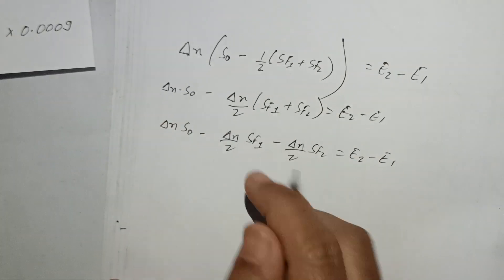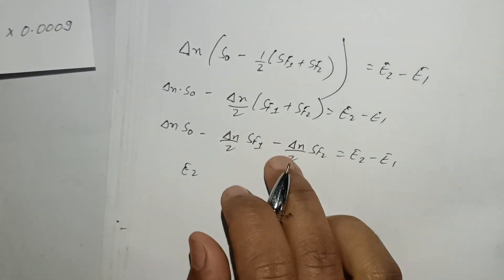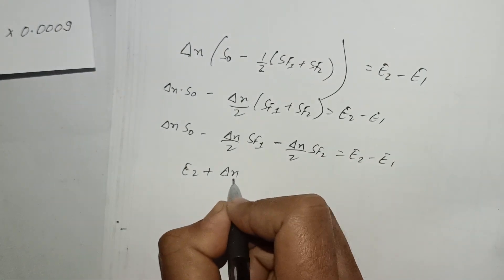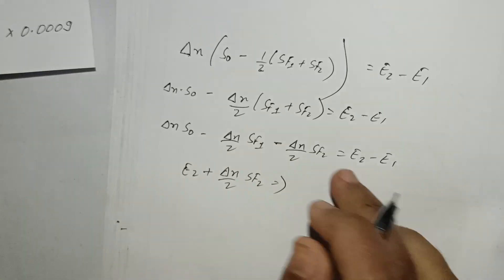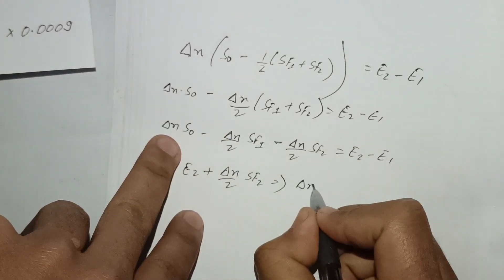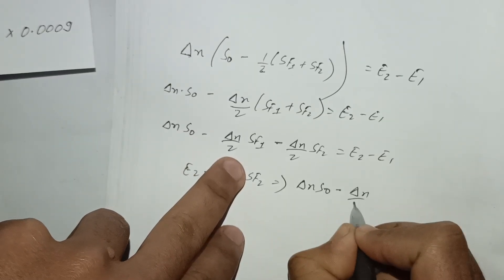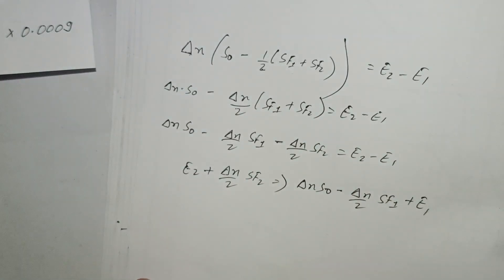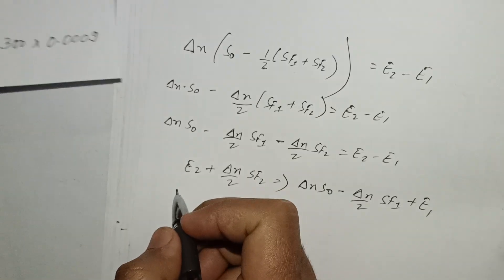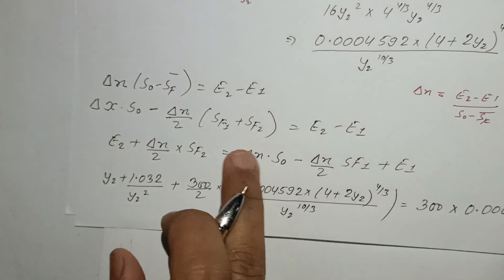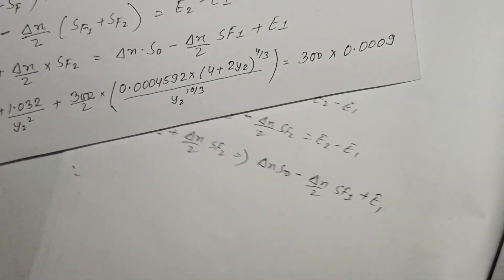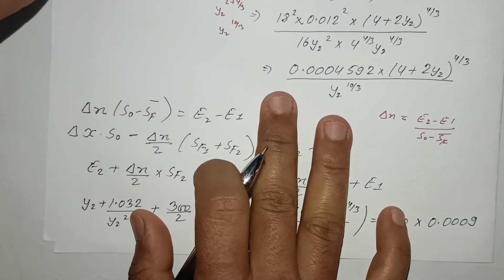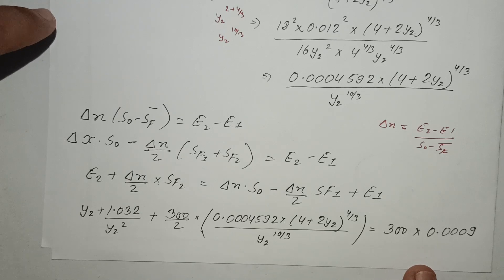Rearranging: delta-x times (S0 minus Sf_average) equals E2 minus E1. With positive E2 and E1, we isolate delta-x. Substituting the values into the direct step formula to compute the distance to the downstream section.